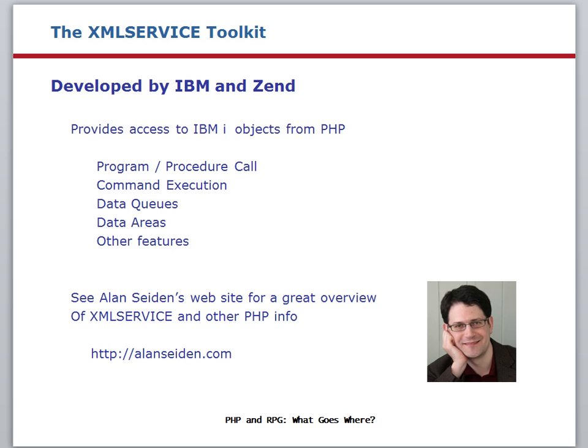The toolkit that you can use to connect your PHP applications to IBM i assets is called XML Service. This toolkit is a no-charge feature of PHP on the IBM i. It was jointly developed by IBM and Zend. It includes features to access programs, procedures, execute commands, work with data queues and data areas, and access other IBM i features. A great resource to learn more about the XML Service Toolkit is Alan Seiden's website. Alan has put together a really good presentation that describes how to use the toolkit. You'll find that presentation at Alan's website using the URL shown here.